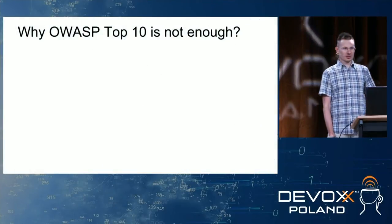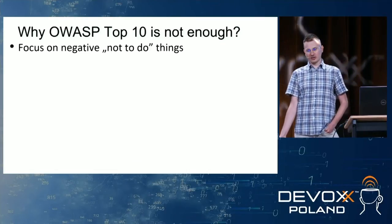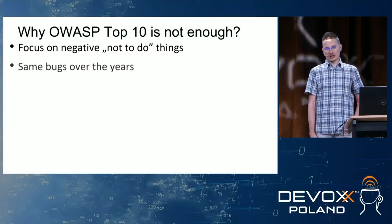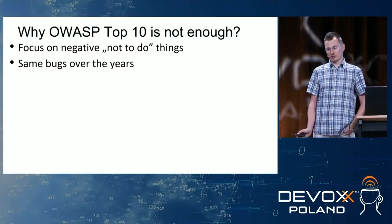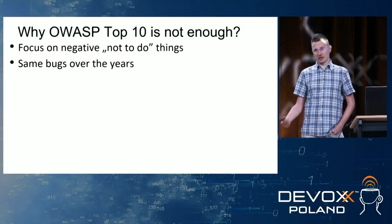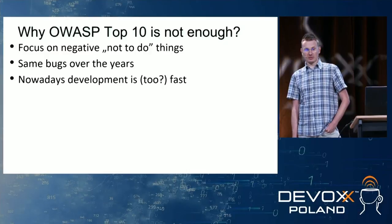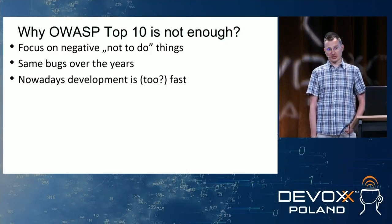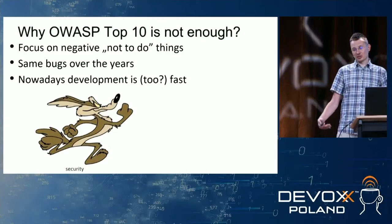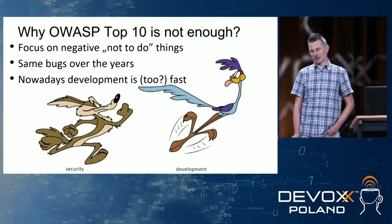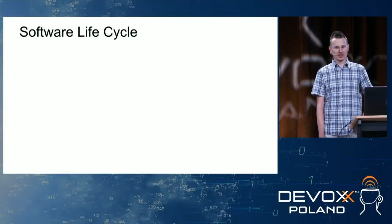So why is OWASP Top 10 not enough? First of all, it just focuses on the negative things — what not to do. We've seen the same bugs happen over the years, yet a lot of developers, IT companies, and IT contracts are basing their security on this report. And nowadays development is fast — maybe a bit too fast — making it hard for security to keep up. Speaking of development, let's have a look at the software lifecycle.